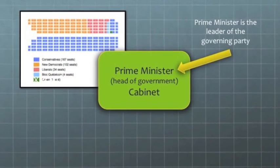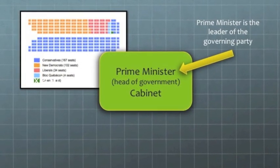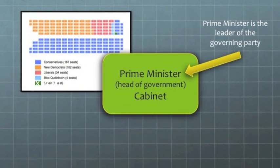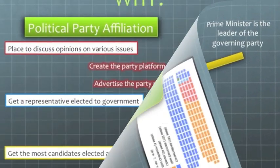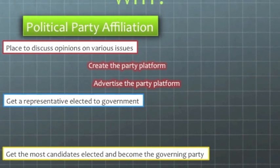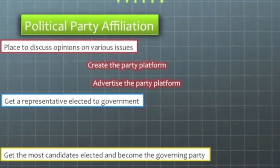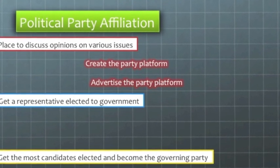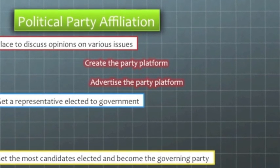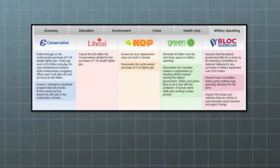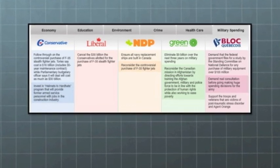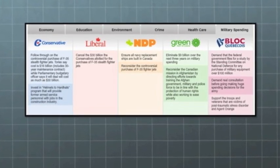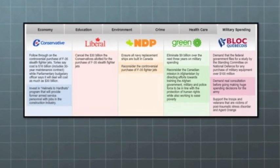Remember that discussion about how the Prime Minister gets his job? If not, go back and watch the video on the branches of government. Each party has what we call a platform — this is the outline of the policies that they think are most important. Political parties will create platforms on issues like the environment, education, social programs, taxation, military spending, foreign policy, and on and on.